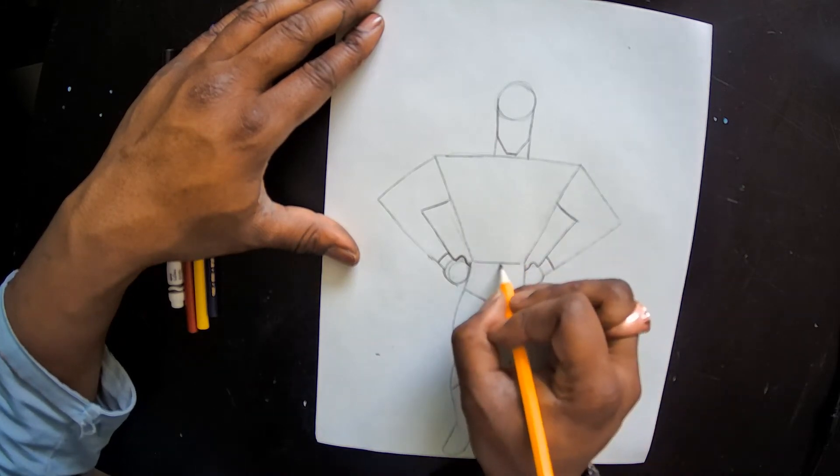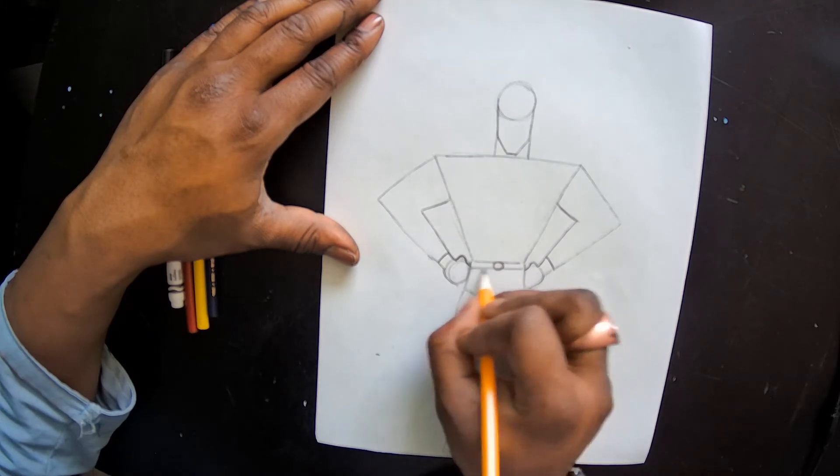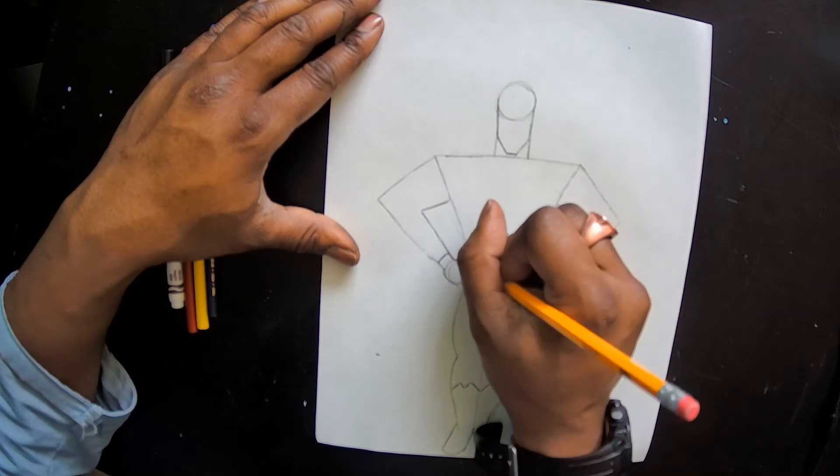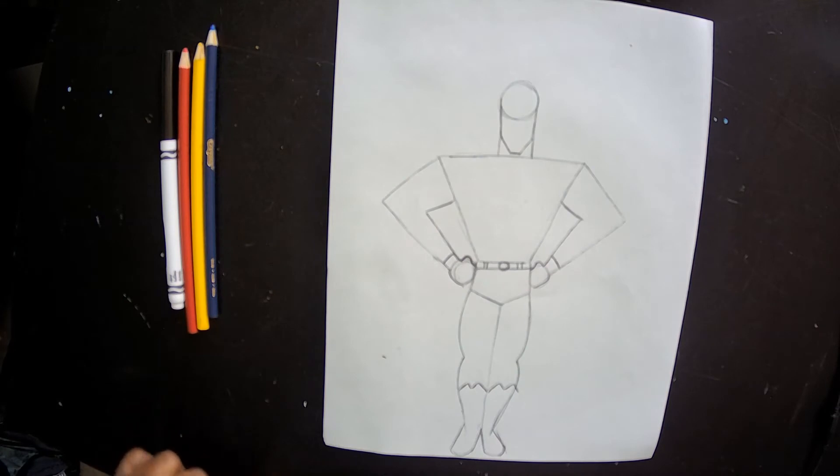For his belt, I'm going to make a circle, a line underneath with two lines for belt loops on each side.